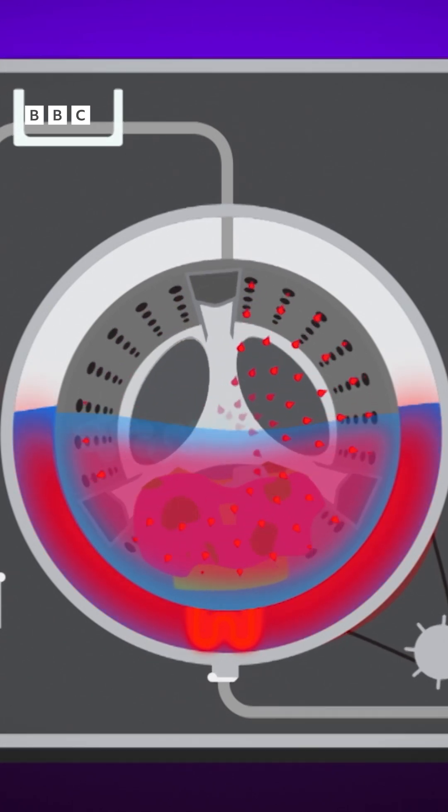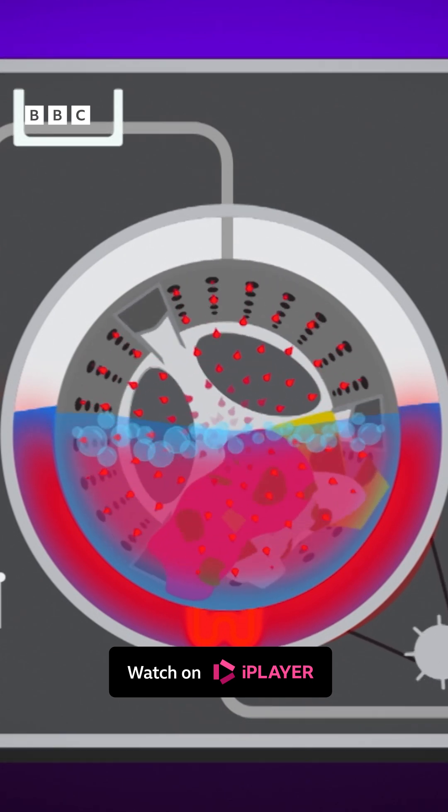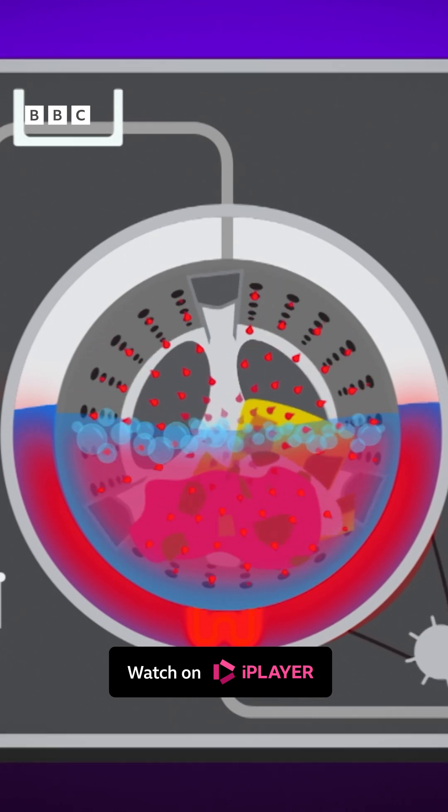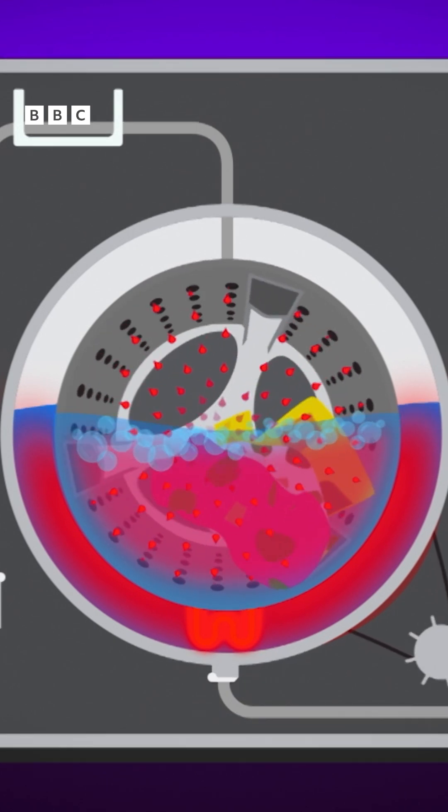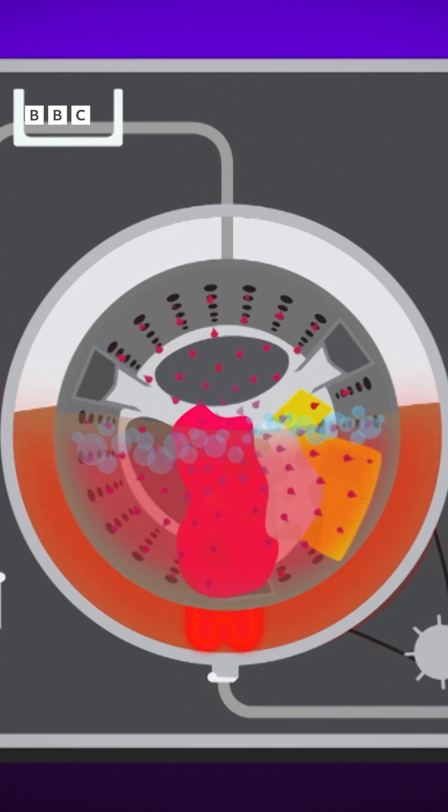At the same time, a motor at the back of the machine starts turning the drum. The drum has paddles inside which toss the clothes around. The turning and tossing of the clothes and soapy water loosens the dirt.